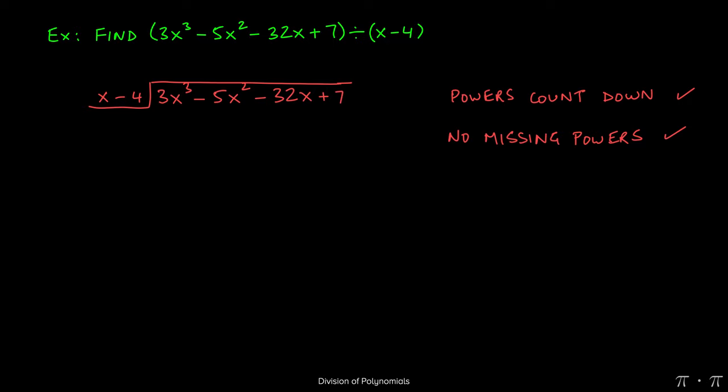At this stage, we're always going to ask ourselves the following question: What do we get when we divide the leading term on the inside by the leading term on the outside? Meaning, what do we get when we divide 3x cubed by x? The answer is 3x squared.